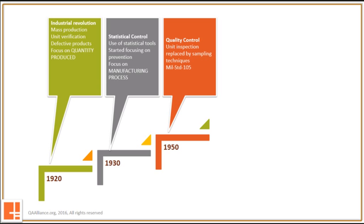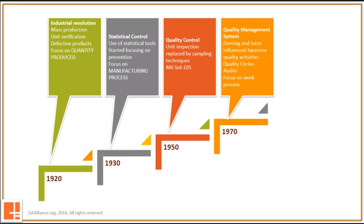After World War II ended, Japan started collecting its pieces again. They began focusing on serious quality efforts and started to study what foreign markets were doing. In this course, they invited Deming and Juran, who influenced their quality initiatives. Both of them encouraged quality processes, quality process and design, and zero defects. It took around 20 years of concerted efforts to revamp Japan's industrial system.